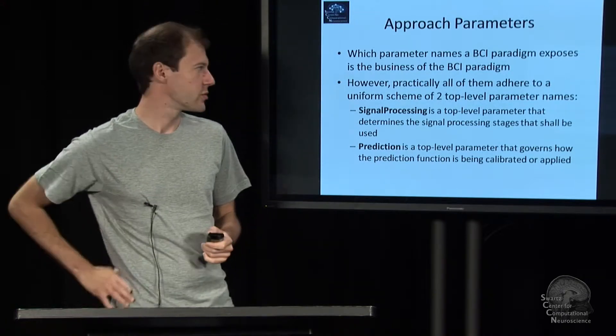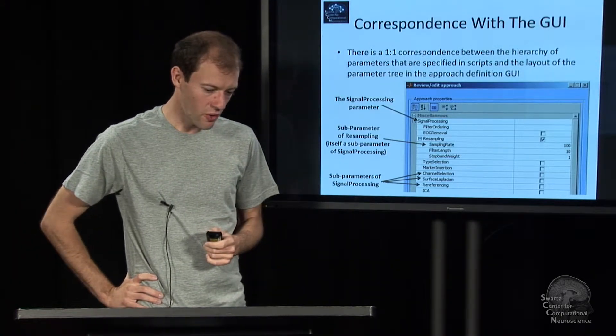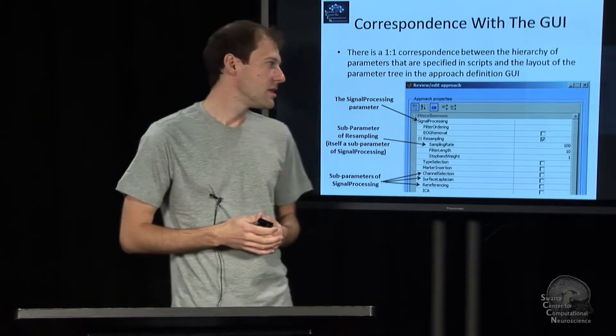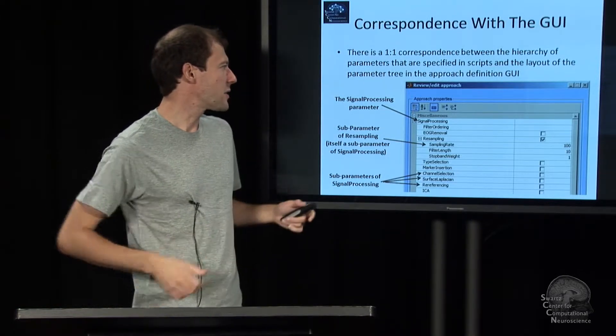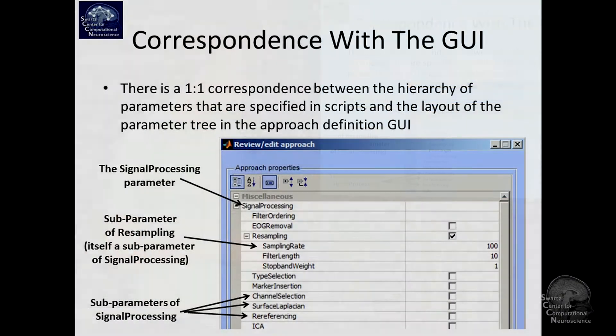Importantly, if you don't know what parameters something has, there is a one-to-one mapping between what you can use in the script and what you see in the GUI for a given paradigm. So if you say I want to make a new approach for a given paradigm, say CSP, and you get the GUI, you see this panel here.